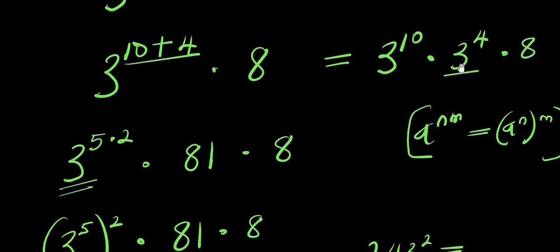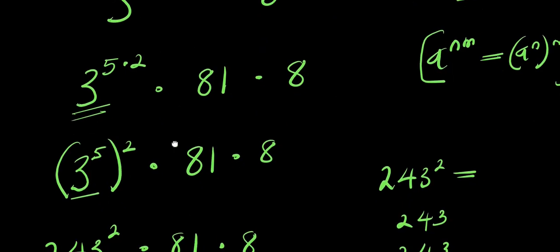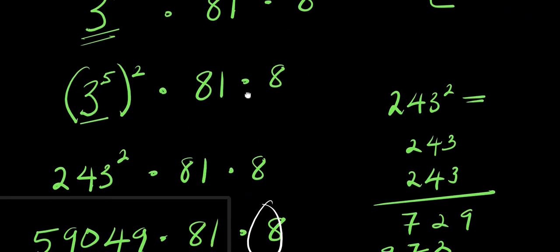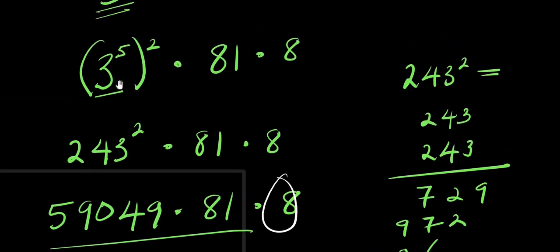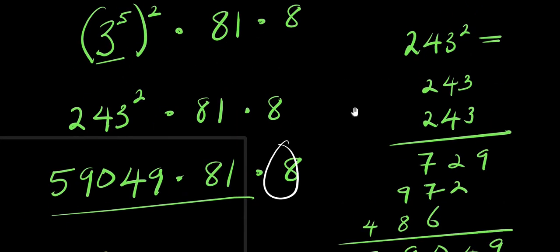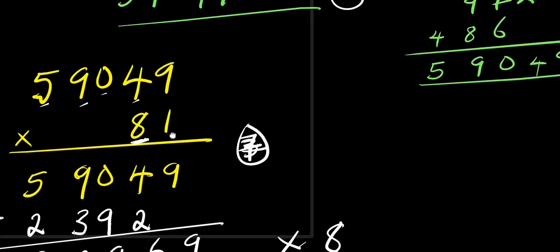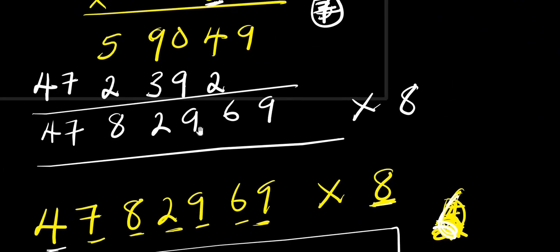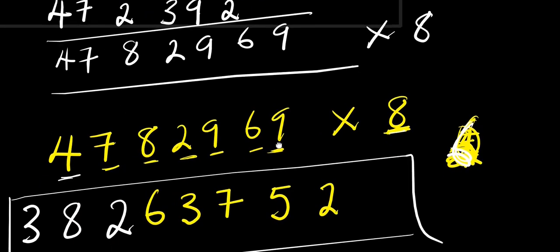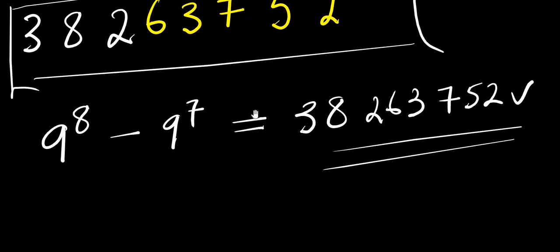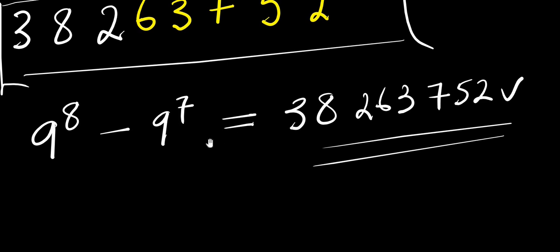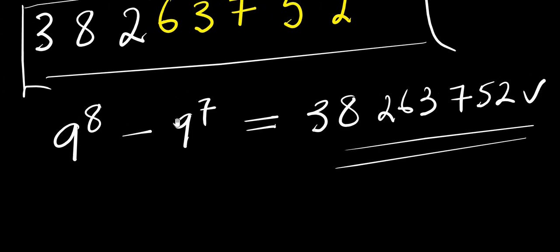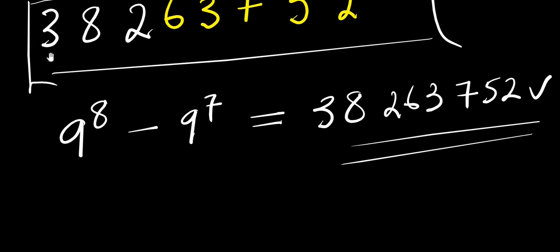After expressing nine as three squared, multiply the exponents to get three to the power fourteen times eight. Split fourteen as ten plus four, apply the identity again, giving three to the power ten times eighty-one times eight. Find three to the power ten: that is fifty-nine thousand and forty-nine. Multiply by eighty-one to get four million seven hundred eighty-two thousand nine hundred sixty-nine, then multiply by eight to get the final answer: thirty-eight million, two hundred and sixty-three thousand, seven hundred and fifty-two. Don't forget to subscribe and share — thank you and goodbye!